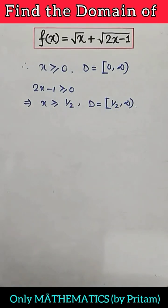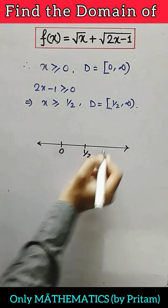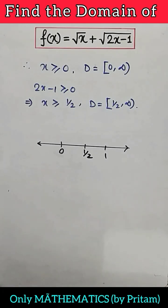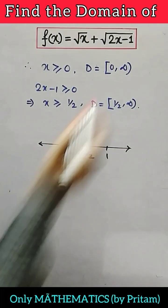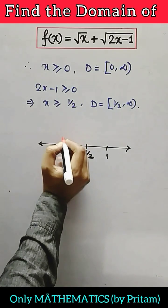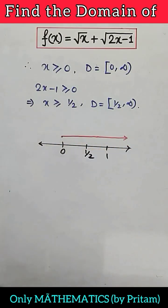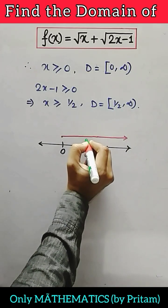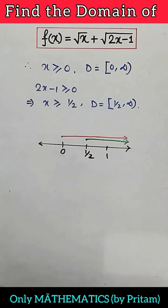Now draw the number line and put 0, half, and 1 on it. For the first function, that is 0 to infinity, we can show this interval by a line starting from 0 to infinity. For the next condition, that is half to infinity, this green line shows half to infinity.